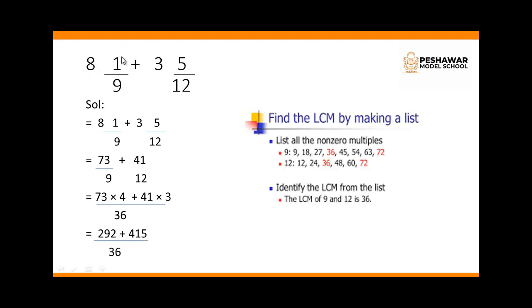So for this addition we have to change Mixed Fraction into improper fraction. For this we have to multiply the denominator with the whole number and then add with the numerator. So 9 multiplied by 8 is 72, plus 1 is 73.